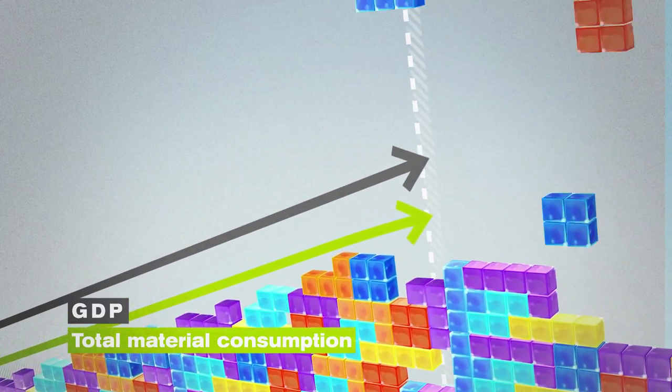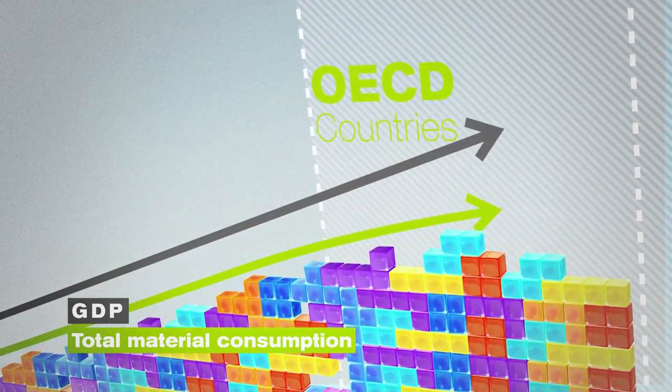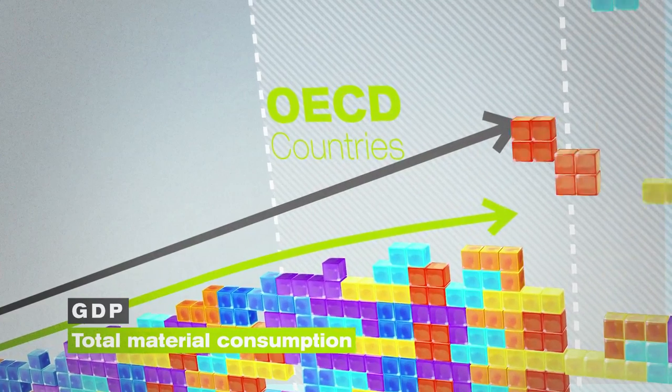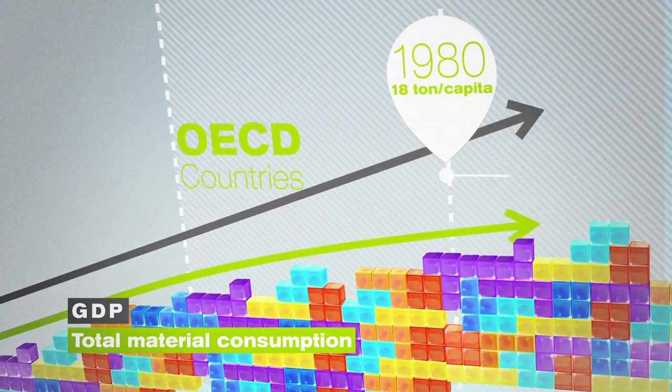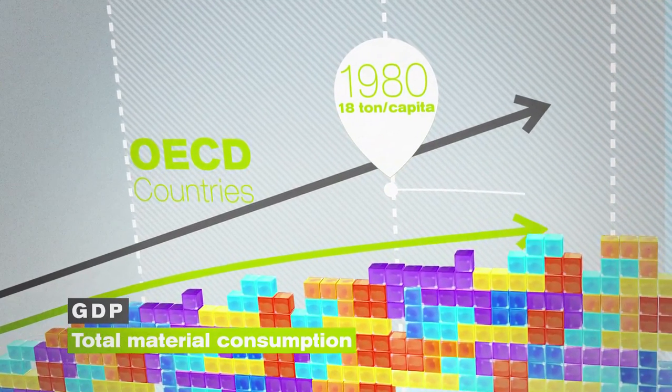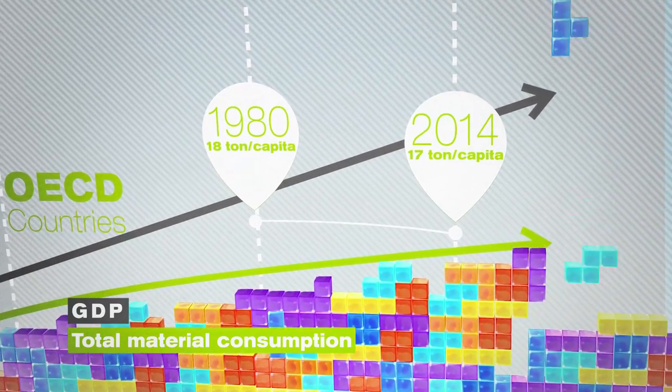In OECD countries, the growth of material extraction and use is slowing down while GDP continues to grow. Material consumption peaked at slightly above 18 tons per capita in 1980. Since then, there has been a slow reduction to 17 tons per capita today.